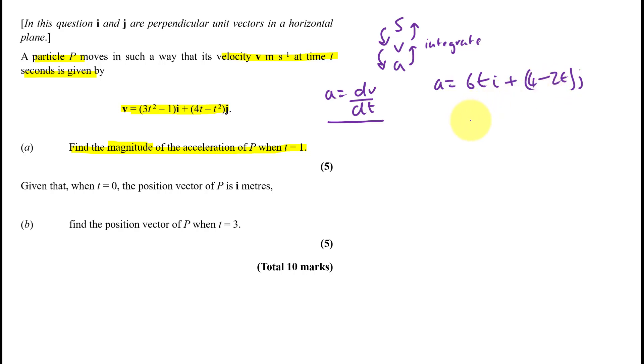And find the magnitude when t equals 1. So let's set t equals 1. So a equals 6i plus 2j. That's quite easy to find the magnitude. So we just square all that. That's how we demonstrate that. So that's 6 squared plus 2 squared, which is root 40, which is 2 root 10, which equals 6.32 meters per second then minus 2. That's a really easy find mark.